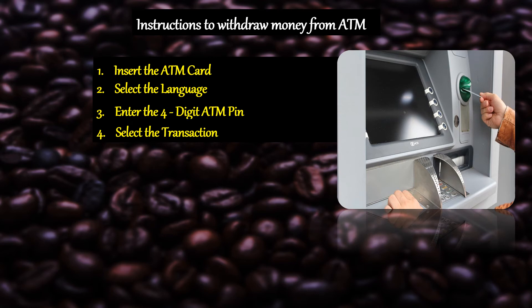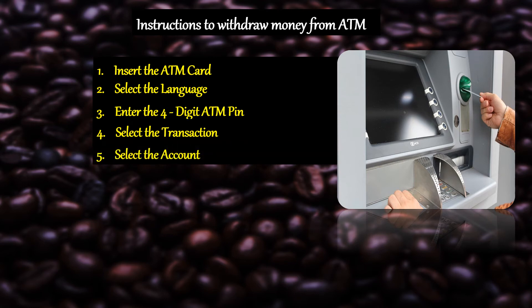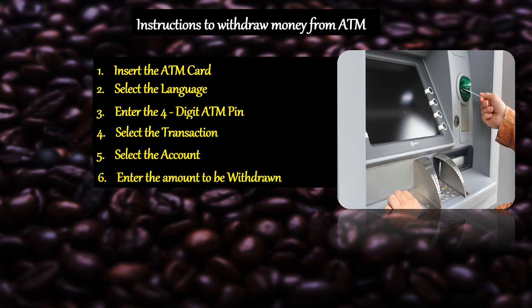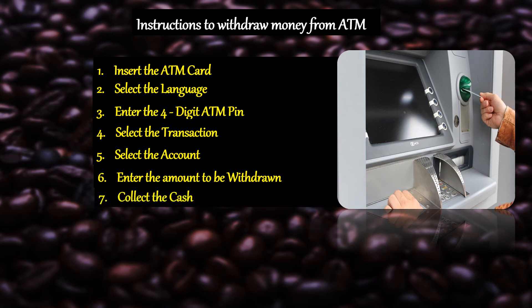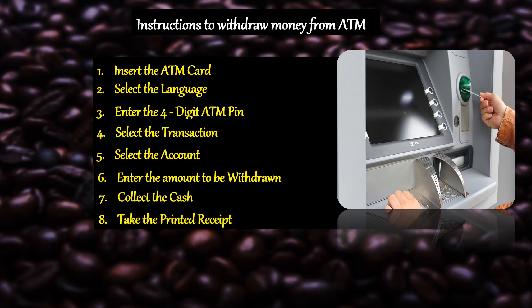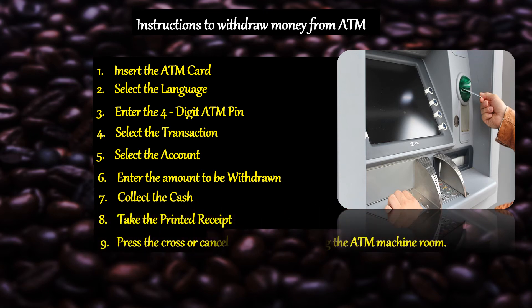Then select the transaction. After that, you need to select the account, whether it is a current account or a savings account. Then enter the amount to be withdrawn. Once you enter the amount to be withdrawn, collect the cash and take the printed receipt. You also have to press the cancel button before leaving the ATM machine.